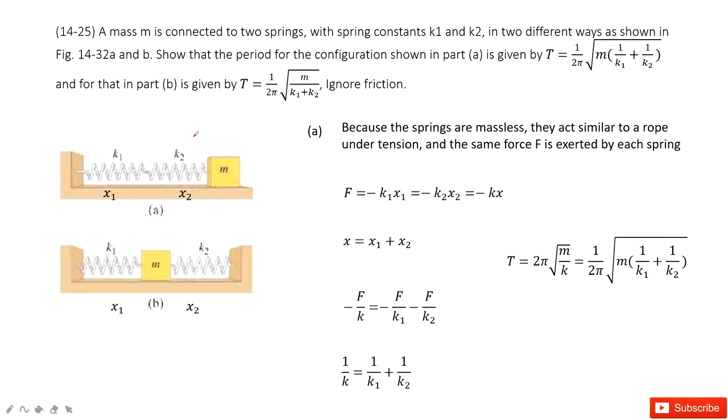In this problem we have two springs, 1 and 2, each with a different spring constant k1 and k2. They are connected in two ways, a and b, and we need to find the period for each configuration.